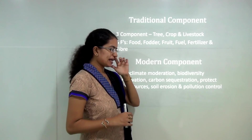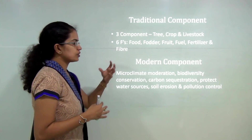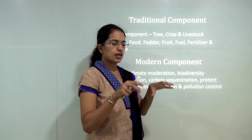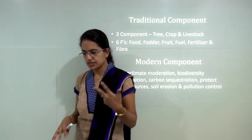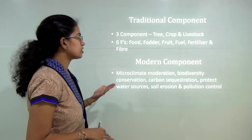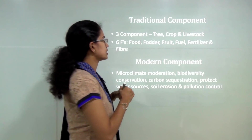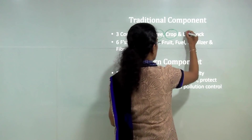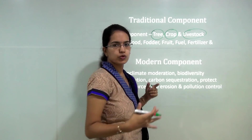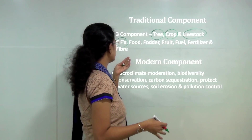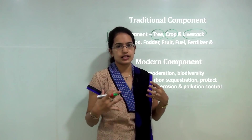Agroforestry involves planting of trees or shrubs in and around farmland or the agricultural belt, and maintaining the rural landscape along with agricultural crops. Agroforestry has two components: the traditional component and the modern component. The traditional component mainly focuses on three things — tree, crops, and livestock — and these work around six F's: food, fodder, fuel, fruits, fertilizers, and fiber.